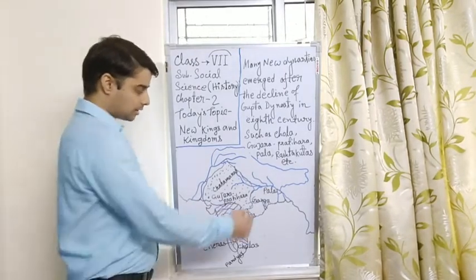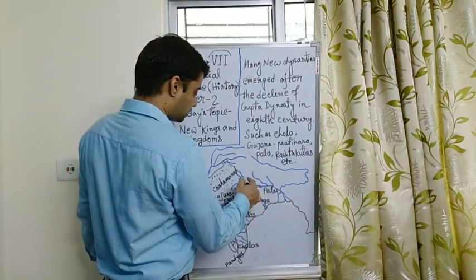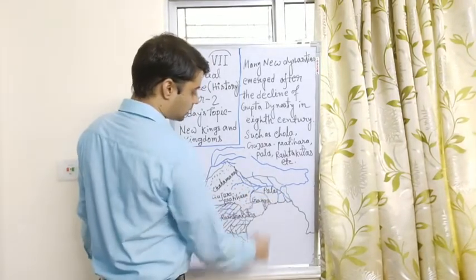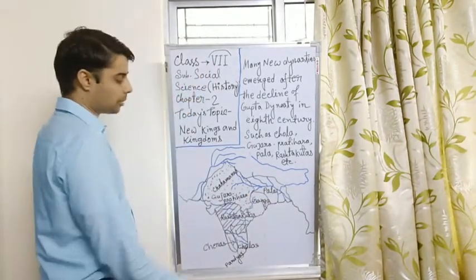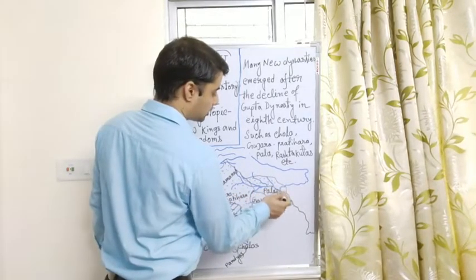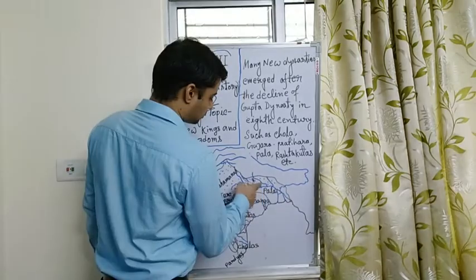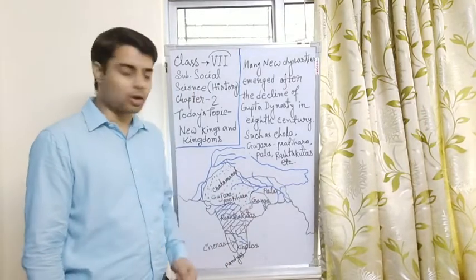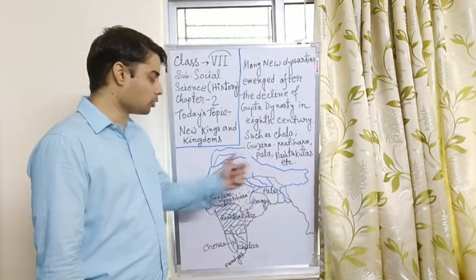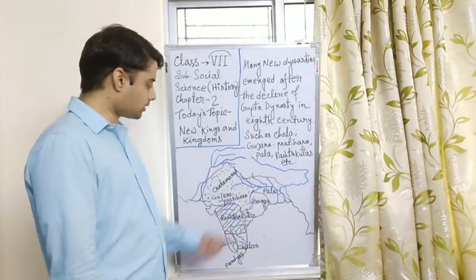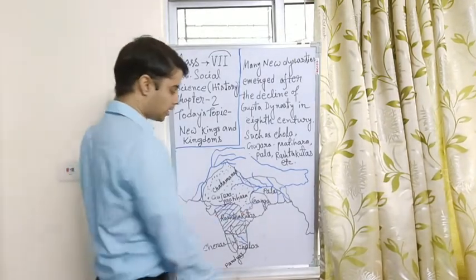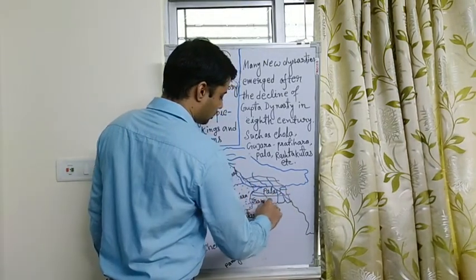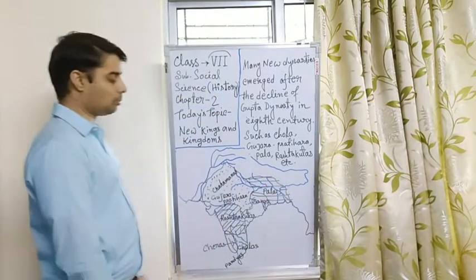So this is the area controlled by the Gurjara Pratihara. Now, the Palas. Yes, the Palas spread their dynasties over this region. This is the area of Palas. It is also today's Bihar, West Bengal and most of the part of today's Bangladesh. Some part of Odisha is included in the Pala dynasty. You mark them in horizontal dynasties. This is the area of Palas.